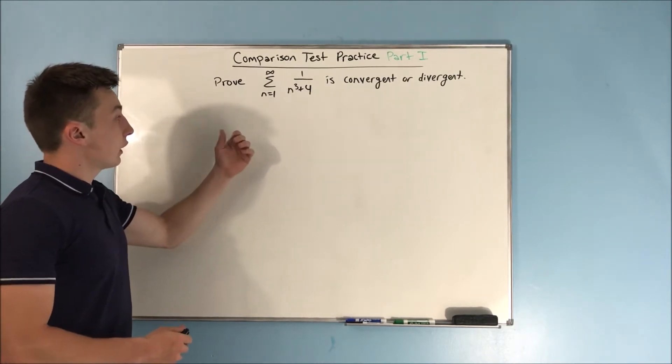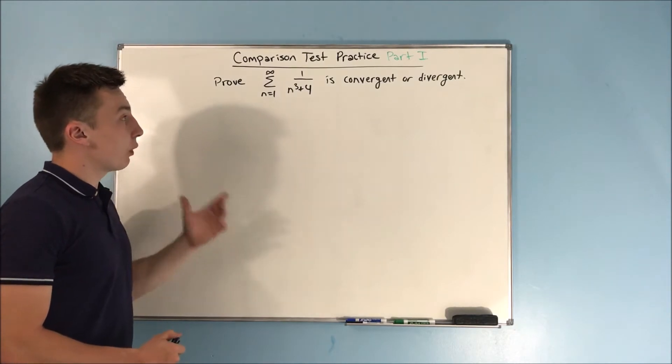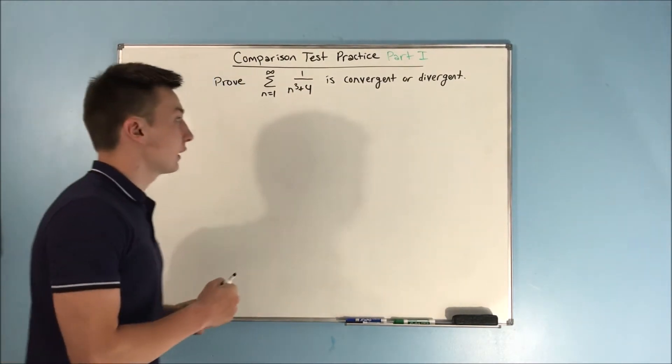We want to prove that the sum from n equals 1 to infinity of 1 over n cubed plus 4 is convergent or divergent. And we're going to use the comparison test to find this.